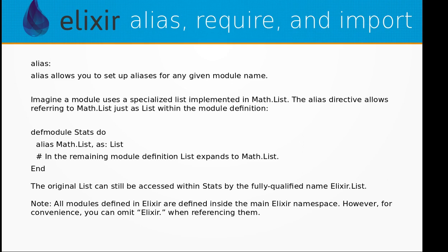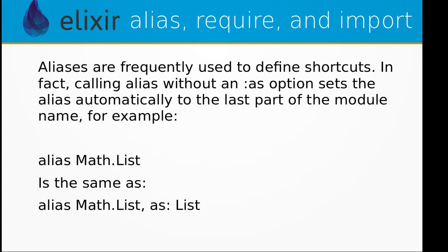In the remaining module definition, List expands to Math.List. The original list can still be accessed within Stats by the fully qualified name Elixir.List. Note that all modules defined in Elixir are defined inside the main Elixir namespace.